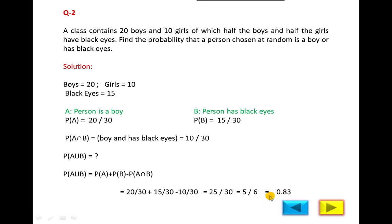So the probability of a person choosing at random is a boy or has black eyes is 0.83.